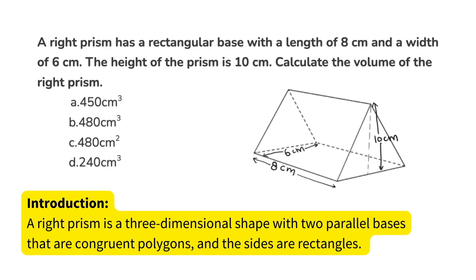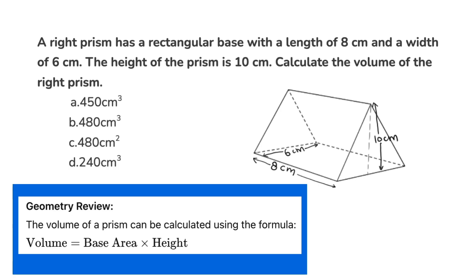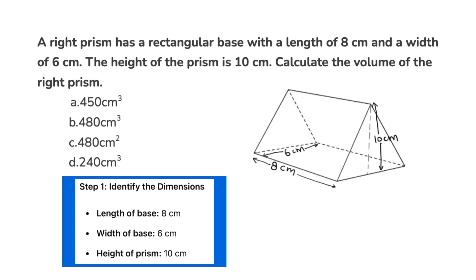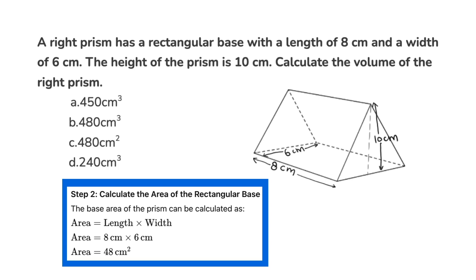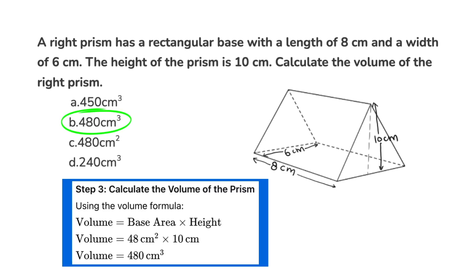A right prism is a three-dimensional shape with two parallel congruent polygon bases, where the sides are rectangles and the height is the perpendicular distance between the bases. The volume of a prism is calculated using the formula: volume equals base area times height. The area of the rectangular base is length times width — 8 times 6 equals 48 centimeters squared. The volume of the prism is therefore 480 centimeters cubed.